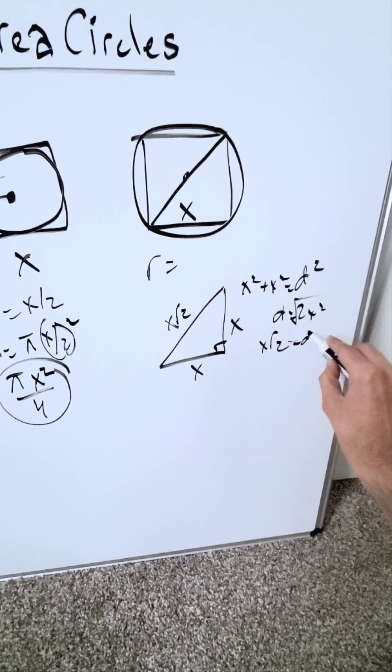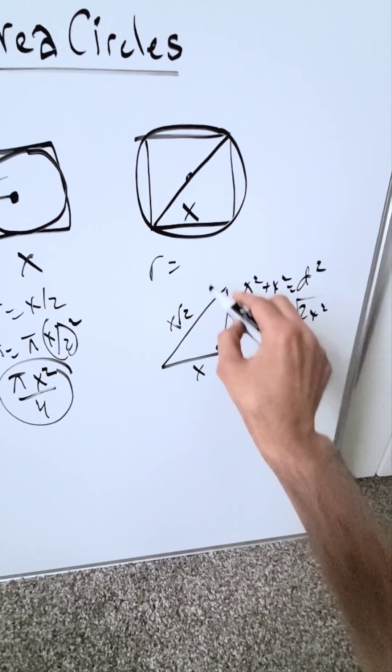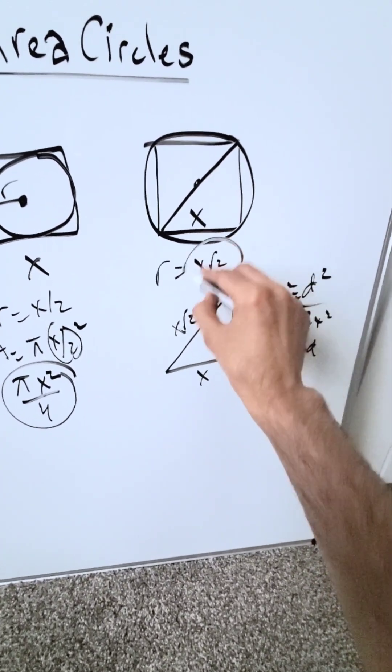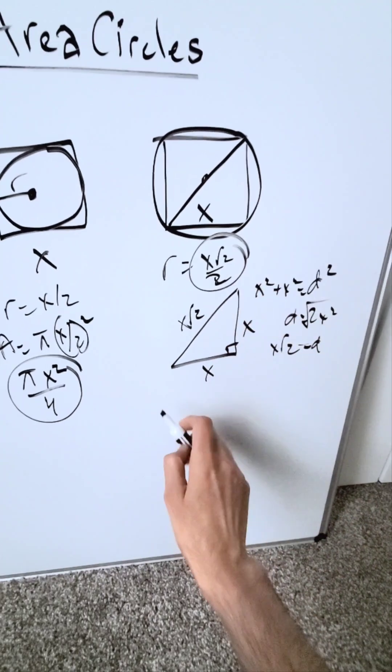This represents my diameter, and half of that is my radius, which is x√2/2. Now we're going to run this through the area formula for a circle.